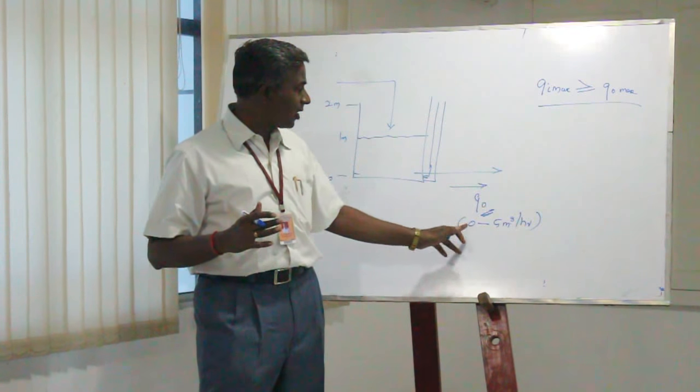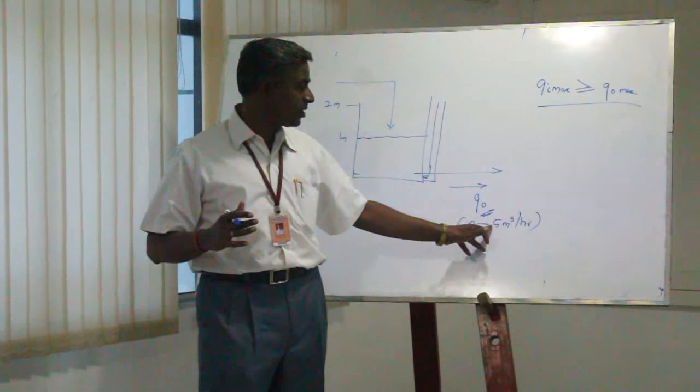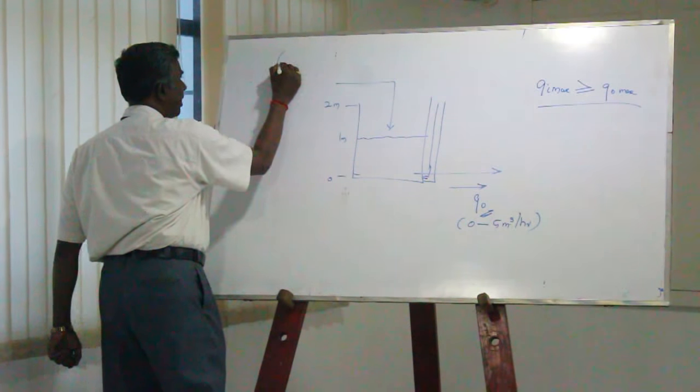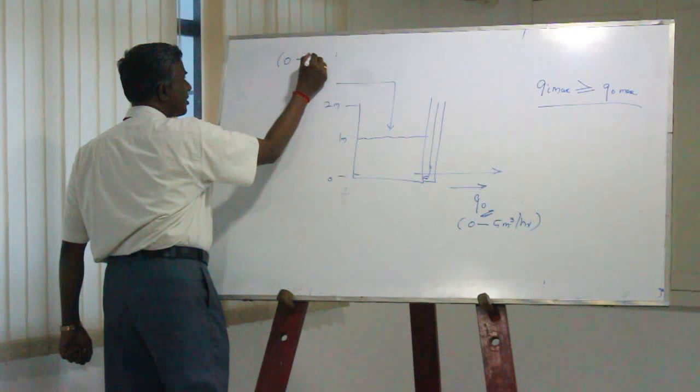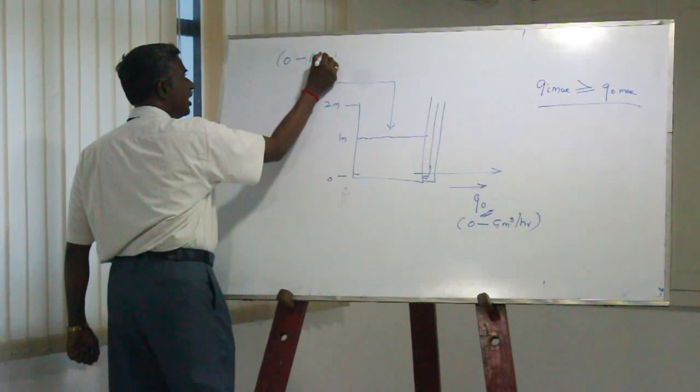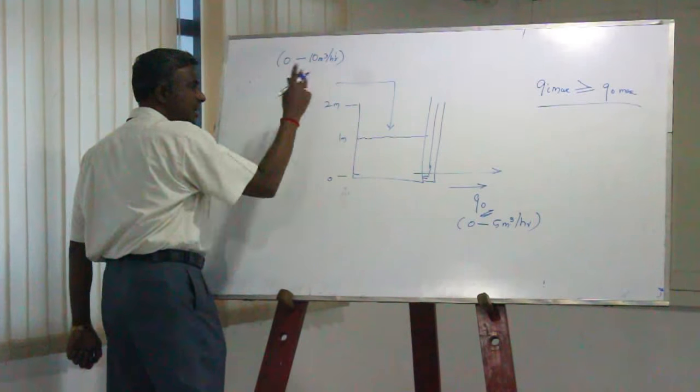If the vice versa happens, liquid is going to go through the tank and never get time to increase the level. To justify this, if Q0 is going to be 0 to 5 cubic meters per hour, obviously my inflow should have the capacity of at least 0 to more than 5. Here I assume it is going to be around 10 cubic meters per hour.